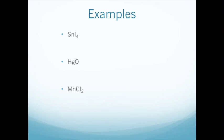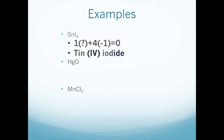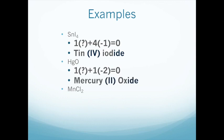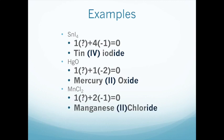More examples: SnBr₂ — bromine has a -1 charge and there are two of them, so tin must be +2, making it tin(II) bromide. SnI₄ — four iodides at -1 each requires tin to have a +4 charge, making it tin(IV) iodide. HgO — mercury(II) oxide, since oxygen is 2- and mercury must be 2+. MnCl₂ — two chlorides at -1 each means manganese is +2, making it manganese(II) chloride.